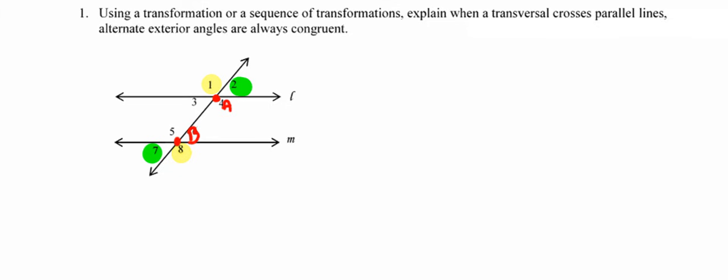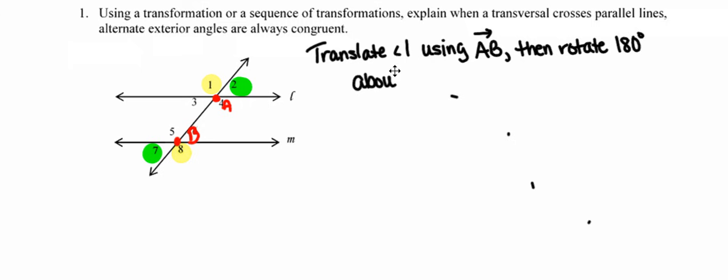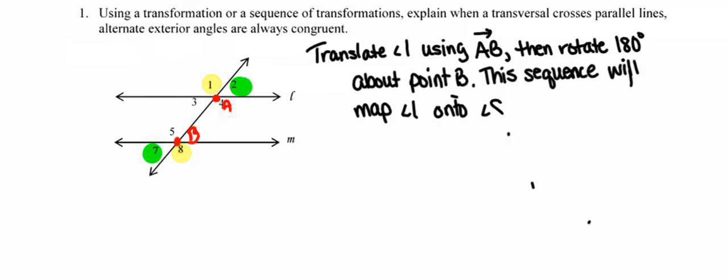So now all I've got to do is go ahead and get this down in writing. So translate angle one using the vector named by points A and B and rotate 180 degrees about point B. This sequence will map angle one onto angle eight.